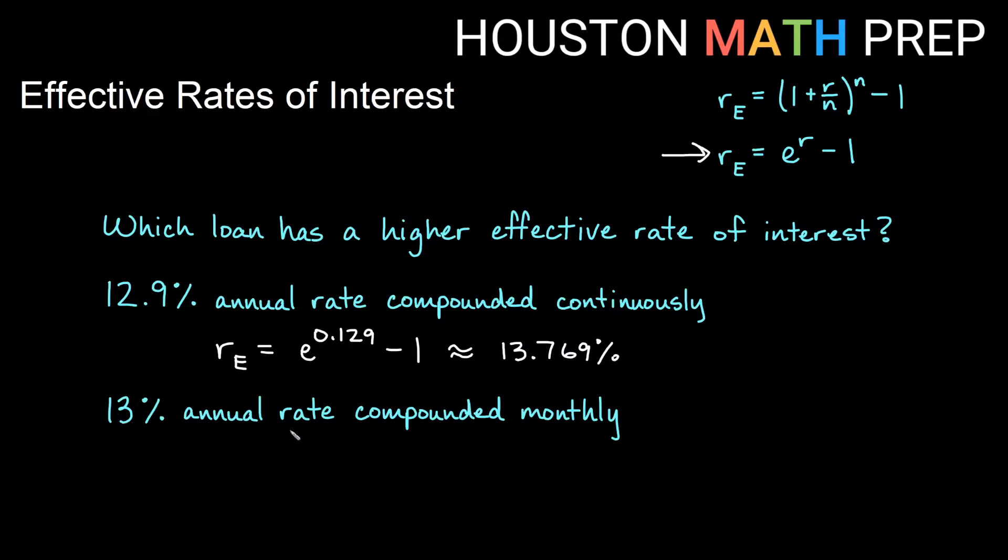13% annual rate compounding monthly. So compounding monthly is discrete. That's every so often. So we use the discrete formula, which is 1 plus r over n to the n. You can tell because this looks like the compounding monthly, we would use n is 12 here.